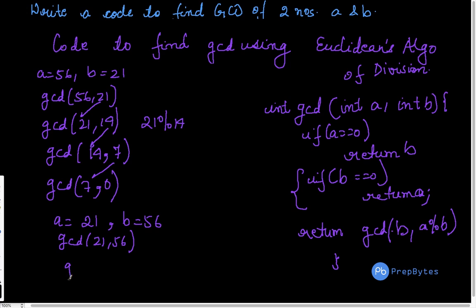Eventually what happens? This 56 comes here and this becomes 21 mod 56. This B becomes 21 mod 56, which is 21.